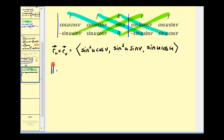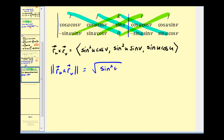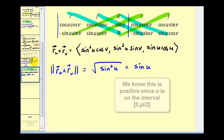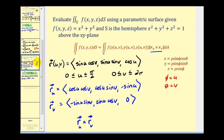Now we need to find the magnitude of this cross product. As shown in another video, you factor the radicand twice and end up with the square root of sine squared u, which equals sine u. So the magnitude of the cross product is sine u.